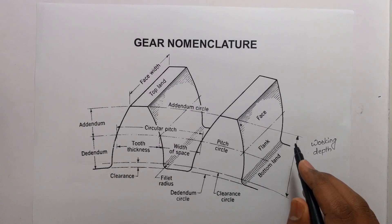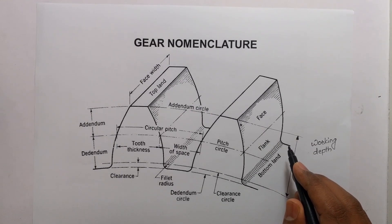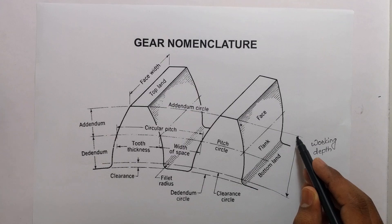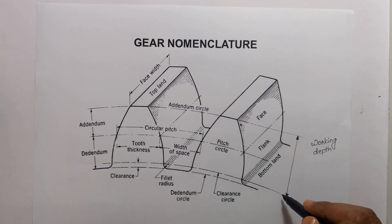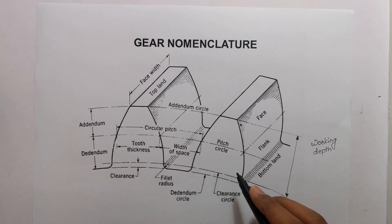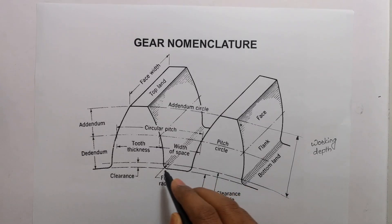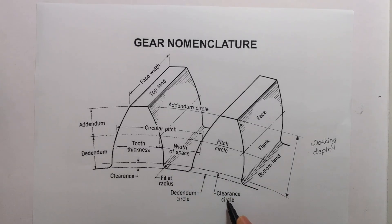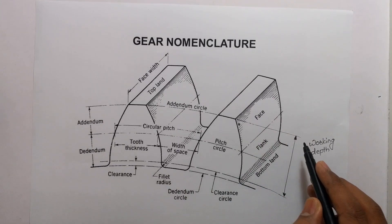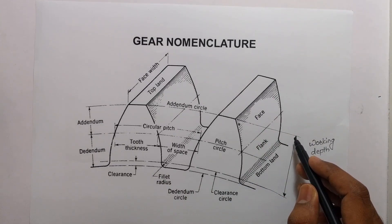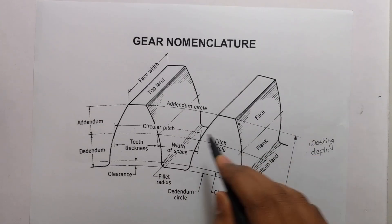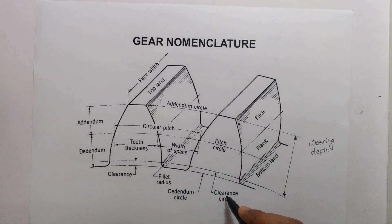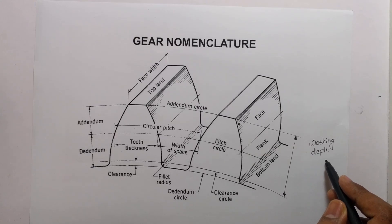Working depth is the radial distance from the addendum circle to the clearance circle.